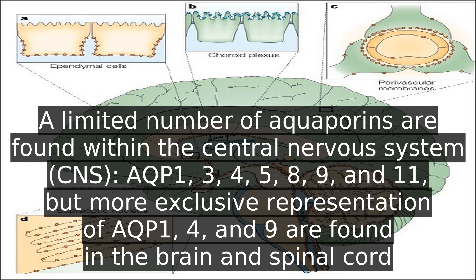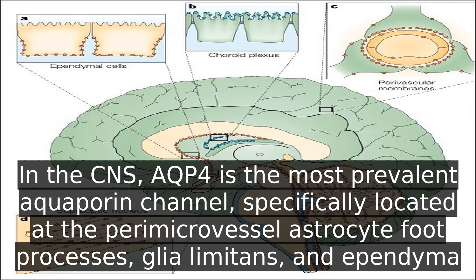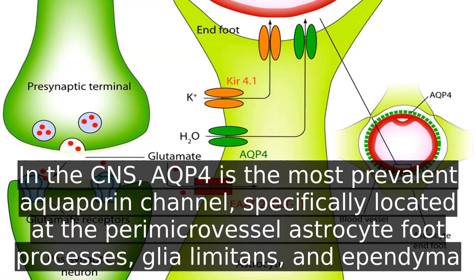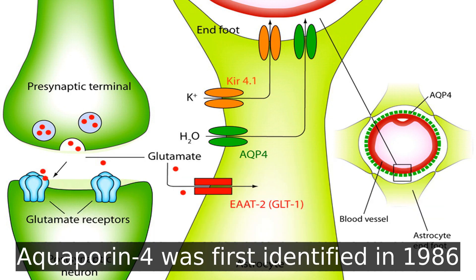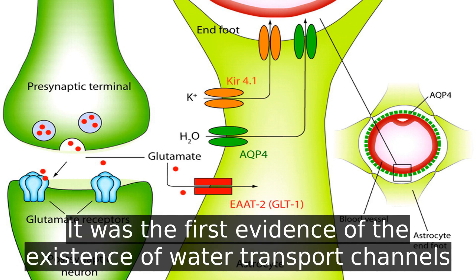But more exclusive representation of AQP1, 4, and 9 are found in the brain and spinal cord. In the CNS, AQP4 is the most prevalent aquaporin channel, specifically located at the paramicrovessel astrocyte foot processes, glia limitans, and ependyma.